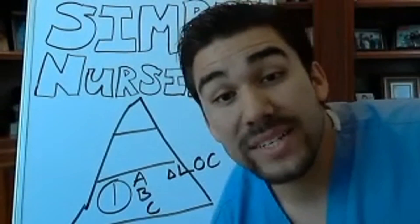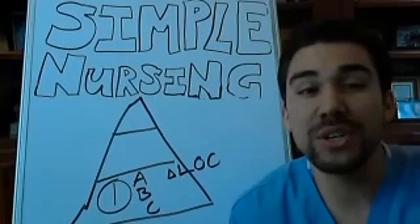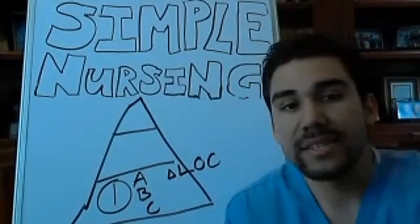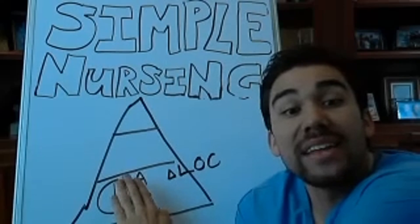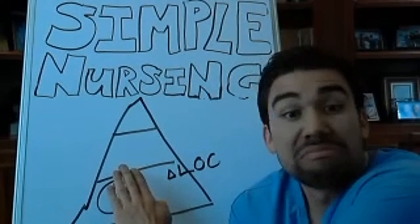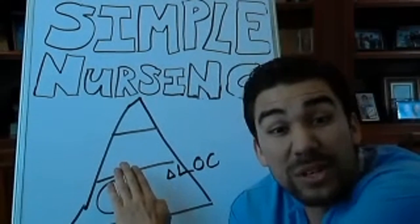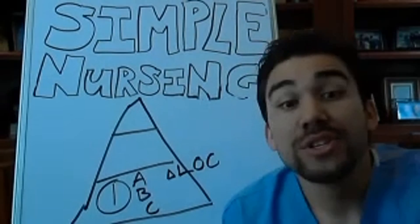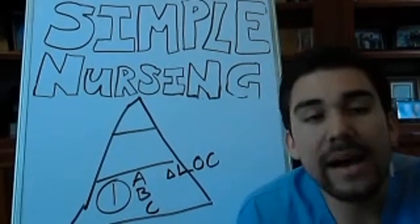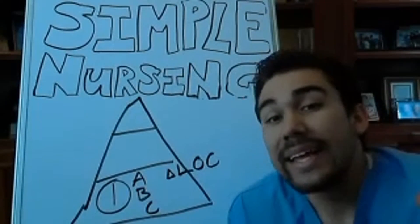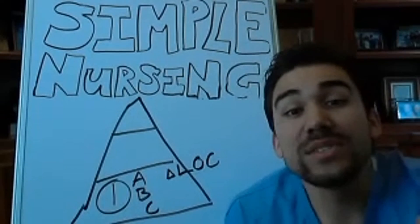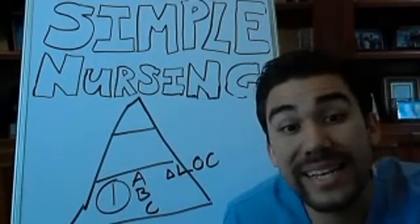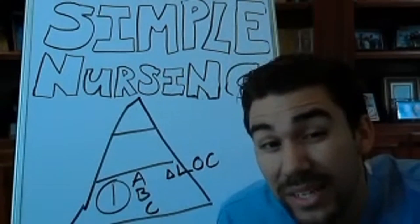Now, what if your test question gives you a question in terms of three patients that are not even ABCs? Then what do you do? I had to learn real quick that ABCs was not the whole prioritization framework with every single client.